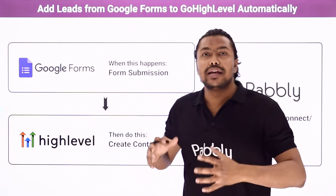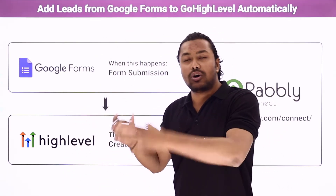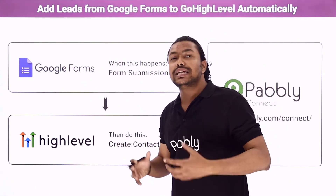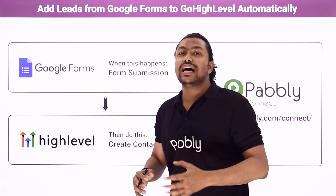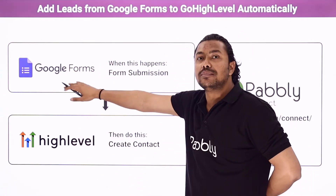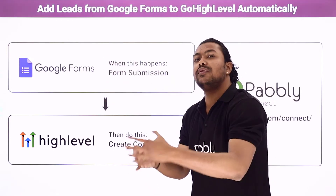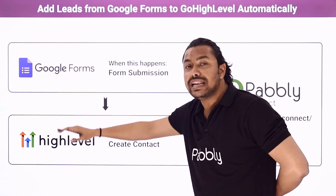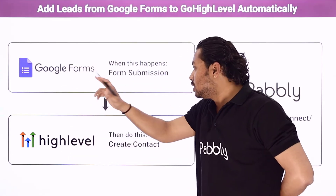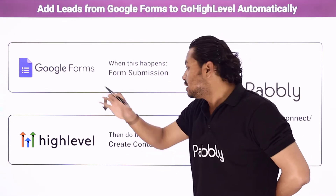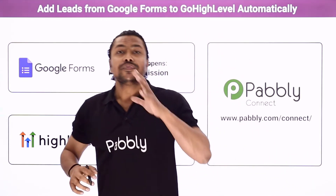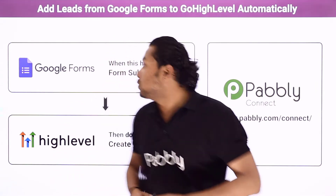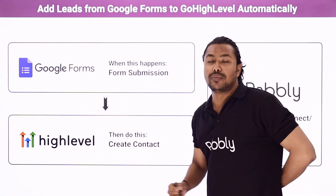Suppose you are running a survey form or any kind of form online so that people can fill it, and if you want a lot of contacts to market through your high-level account — when people fill these Google Forms, whether it's a survey or anything, the details from these Google Forms will go to the high-level account automatically and a new contact will be saved.